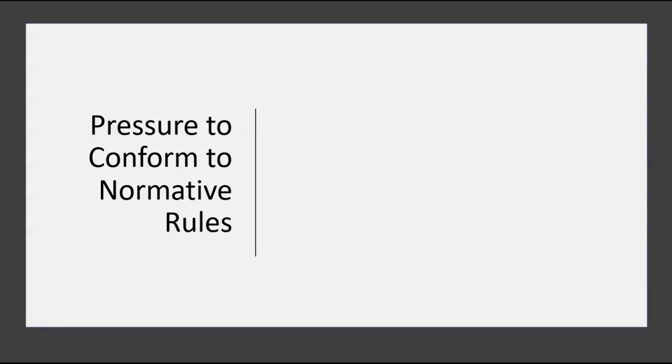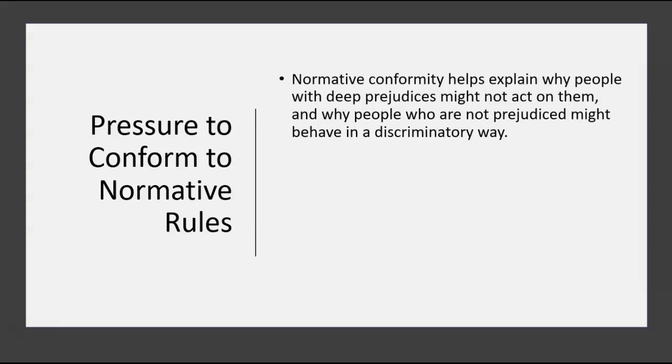We're going to start by going back to what we know about conformity, specifically normative conformity. Remember back to that chapter on conformity where we talked about normative social influence versus informational social influence. In this case, we're really thinking about what are the rules, the norms on the ground that can help us predict when people are going to express their prejudice.